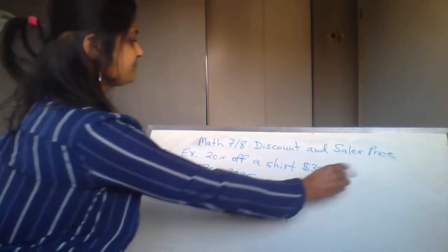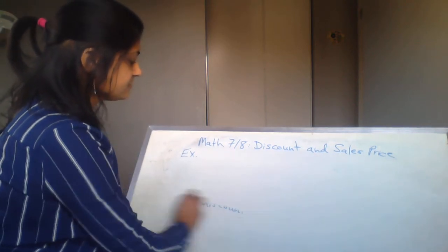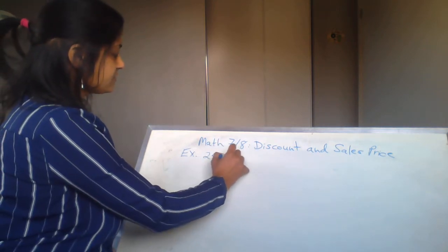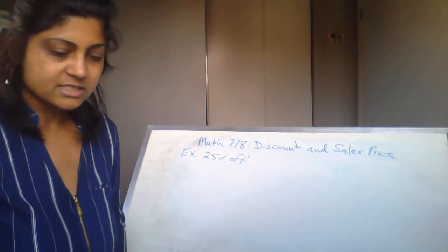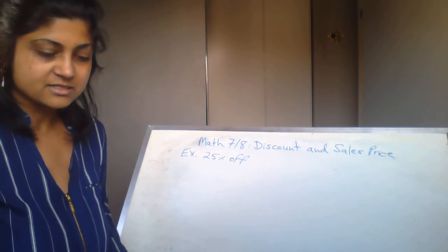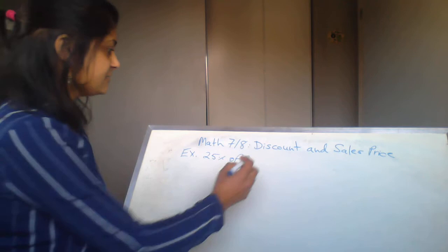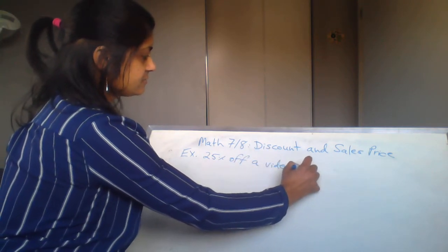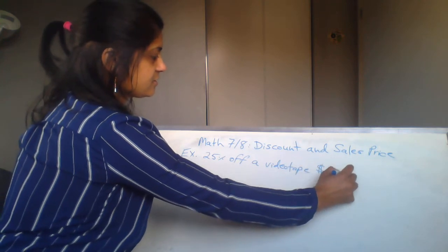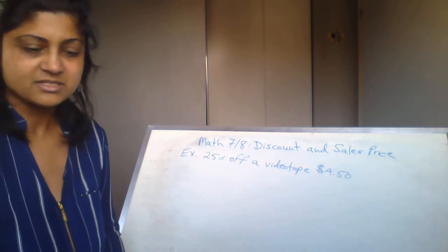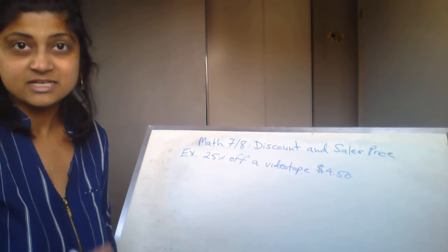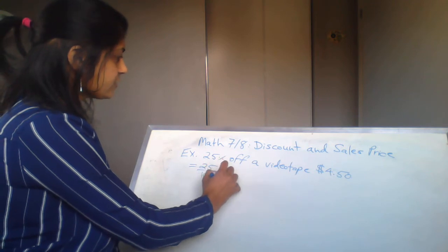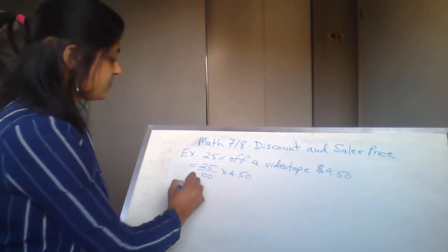Let's try one more question. The next one is 25% off, and what they give you is a videotape at $4.50. So we're going to do 25% over 100, then times it by $4.50.